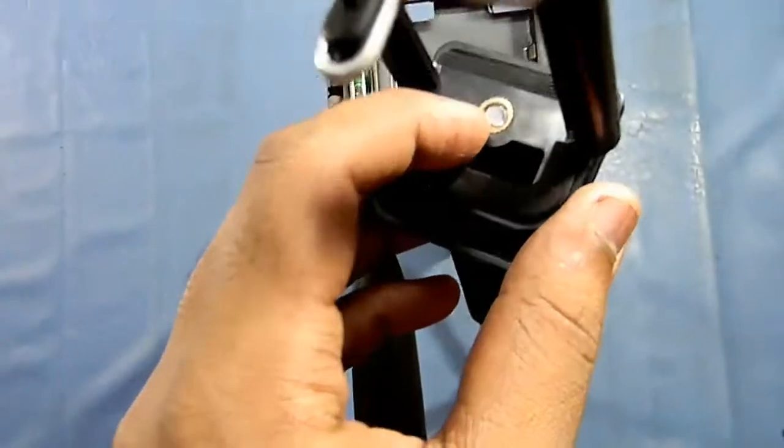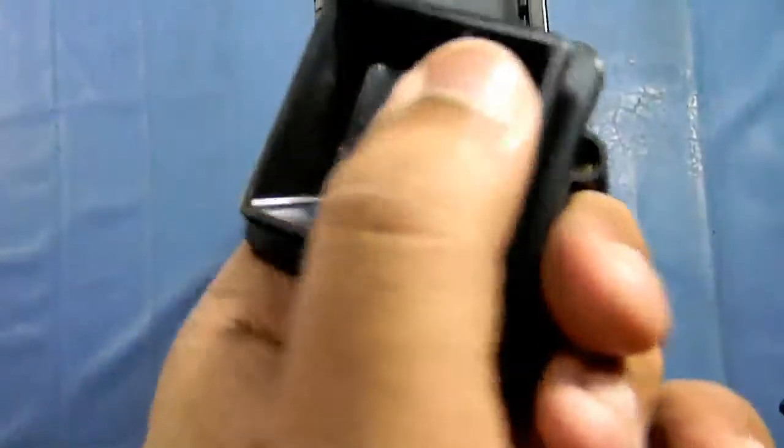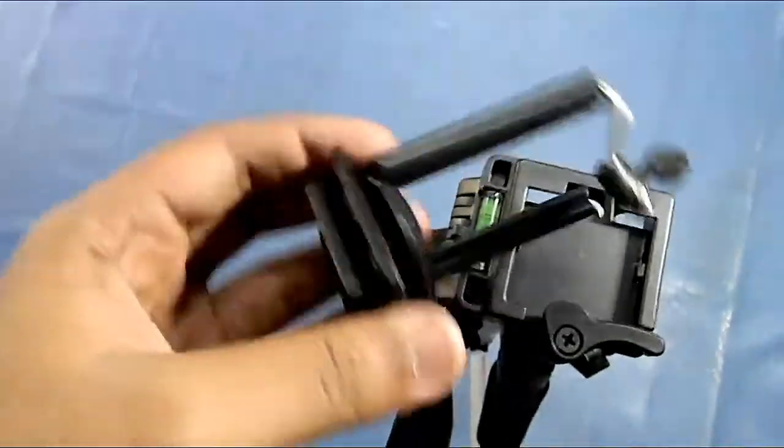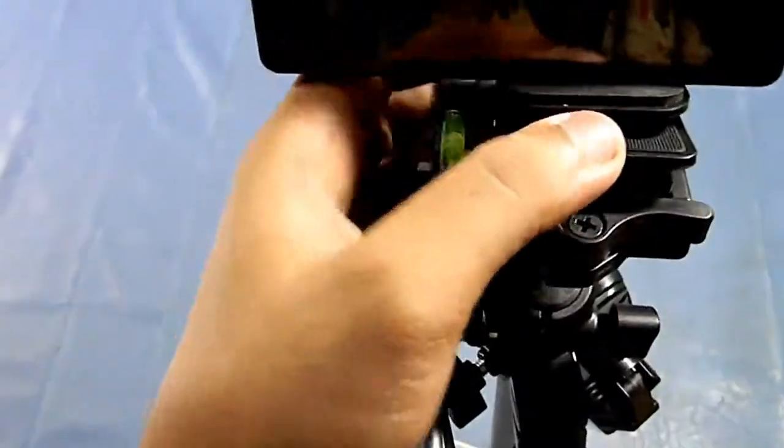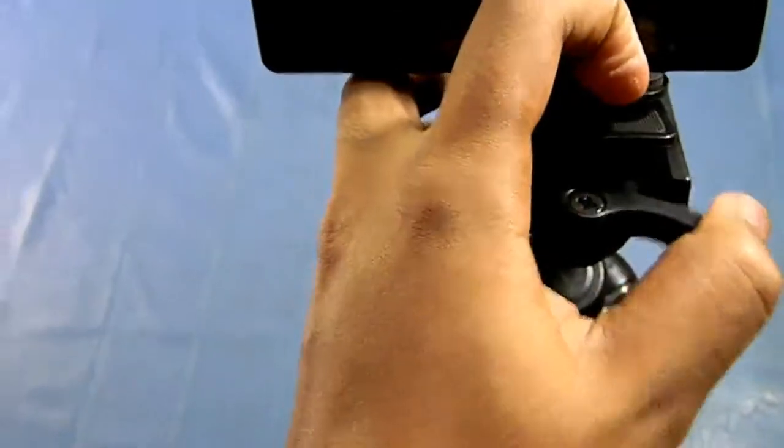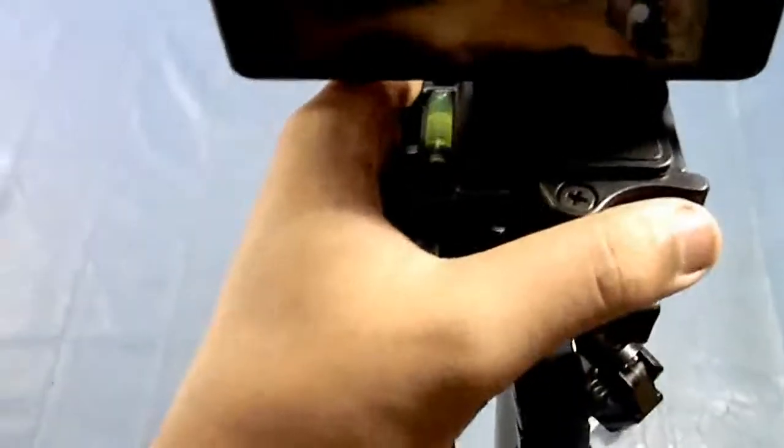As you can see, I have tightened the nut over here. Close this flap. After this, clip your mobile here. I have clipped my mobile with this. Now let me insert it. Insert this one like this. Pull this handle, drop it, release it, and lock it.